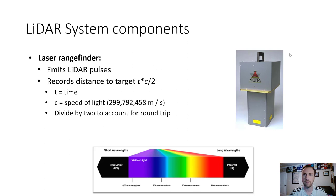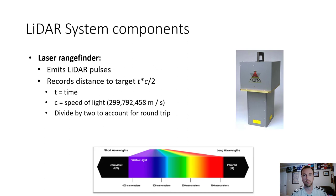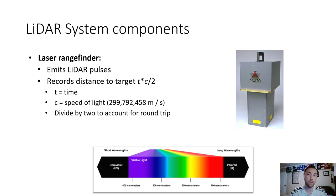One LiDAR system component is the laser rangefinder — the actual instrument that emits the LiDAR pulses of light and records the distance to the target. It uses the formula: distance = (t × c) / 2, where t is time and c is the speed of light (299,792,458 meters per second, or 186,000 miles per second). Because the speed of light is so fast, a new pulse can be sent out almost immediately after the previous one returns.